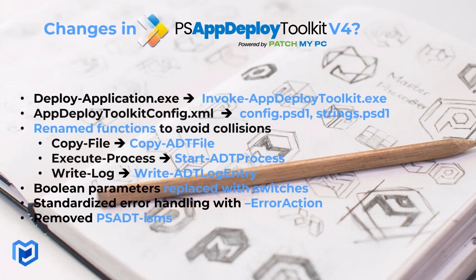In terms of packaging changes for v4: they renamed the main executable and script file, and moved configuration from an XML file to multiple PSD1 files. The config.psd1 handles toolkit configuration such as log location, default installation parameters, and timeouts. All language strings were moved to strings.psd1 — a separate file for each language. All functions were renamed with the ADT prefix to avoid collisions and make it clearer which are PSADT functions. Parameters were also standardized: where v3 had a mix of switch and boolean parameters, v4 uses switch parameters exclusively for consistency.